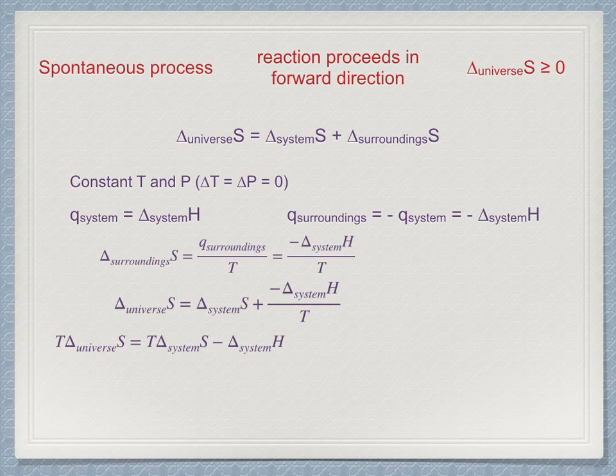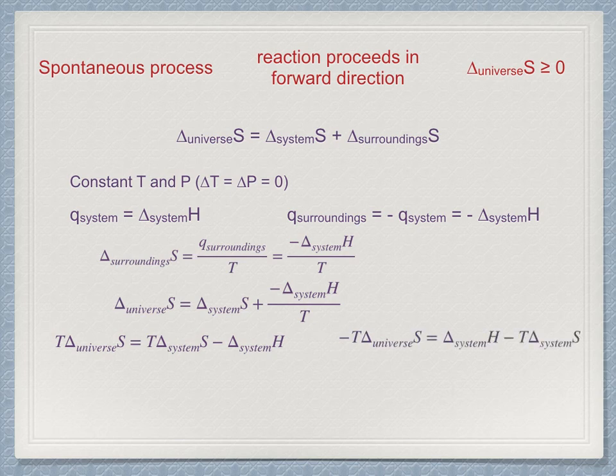We switch the signs around, multiply through by minus one, to get minus T delta S universe equals delta H system minus T delta S system. Everything on the right-hand side is related to the system only.